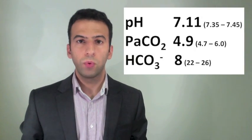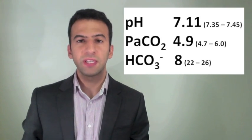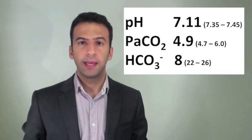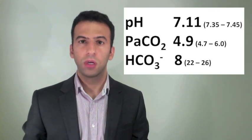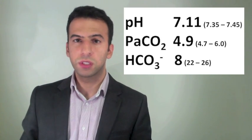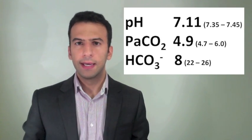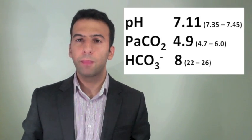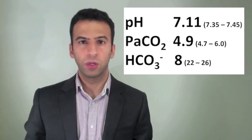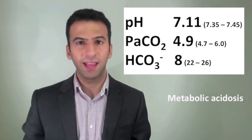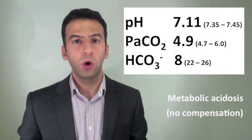In this example, the pH is 7.11 — below the normal range, so this is an acidemia. In Step 2, the CO2 is within the normal range, so it's not moving in accordance with the pH in Step 1, and so the problem is probably metabolic. In Step 3, the bicarbonate is low, which is acidifying, moving in accordance with the pH — confirming this is a metabolic acidosis. The CO2 is normal, so there's no compensation — an uncompensated metabolic acidosis.